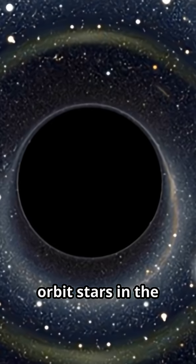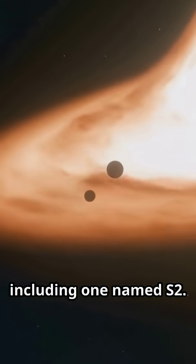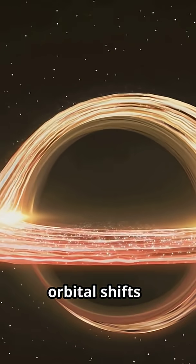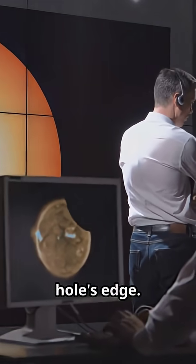Right up close orbit stars in the Sgr A cluster, including one named S2. Every time S2 zips by, we detect tiny orbital shifts, proof Einstein still holds up, even at a black hole's edge.